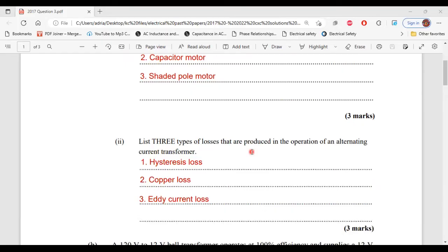Part two says, list three types of losses that are produced in the operation of an alternating current transformer. The three types of losses are hysteresis loss, copper loss, and eddy current loss. That's it for part two of A.